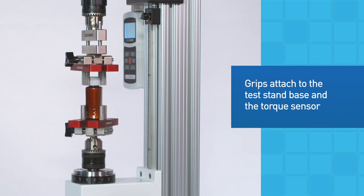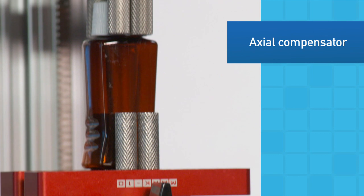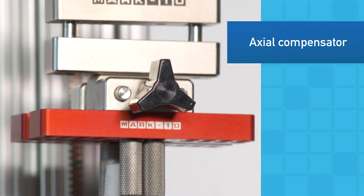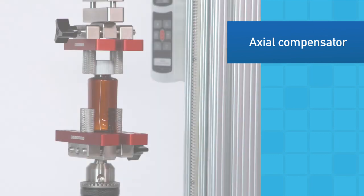Grips can be fastened onto the base and torque sensor. An available axial compensator allows for vertical movement for applications such as fastener torque and bottle cap torque.